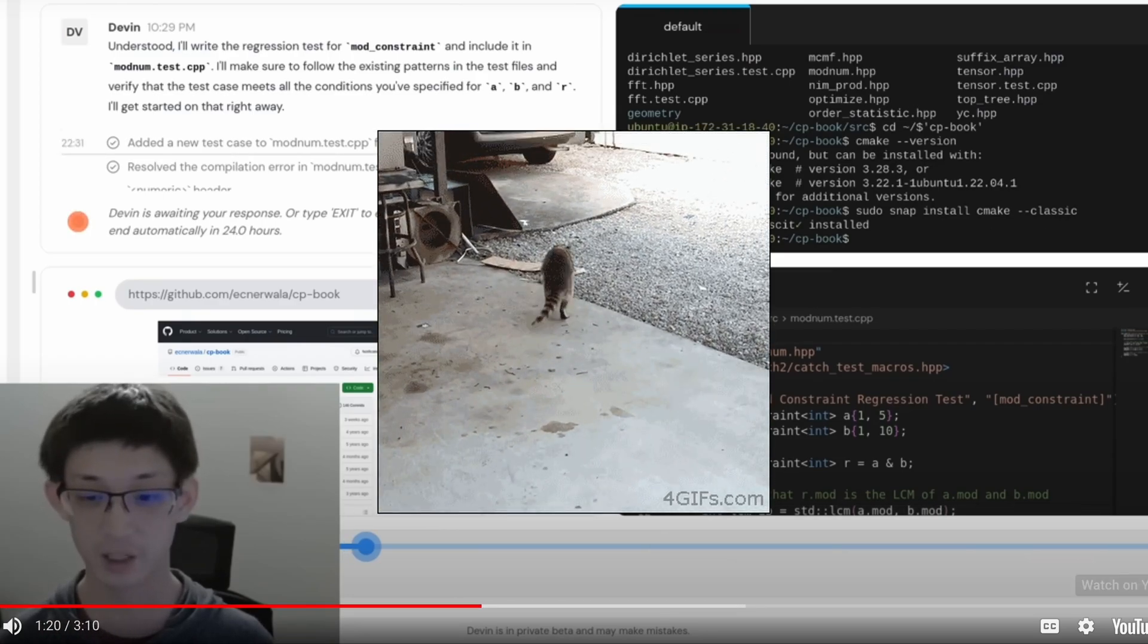But you should understand that Devon was made by software engineers like you, and it belongs to a class of AI technologies called autonomous AI agents. If you understand how autonomous AI agents work, then you can pretty much make sense of how Devon works, and also you can build tools like Devon.